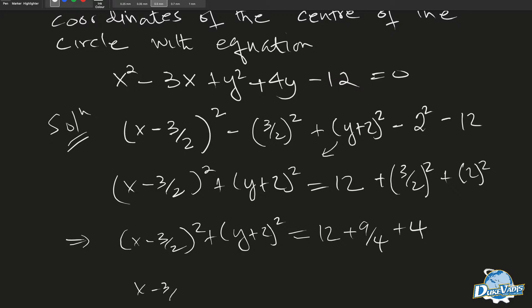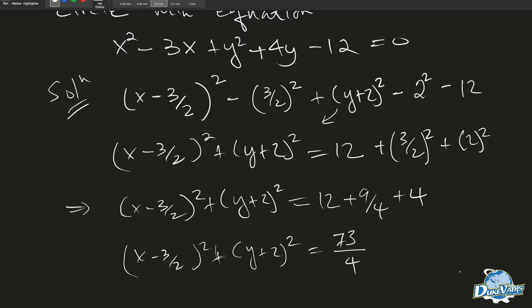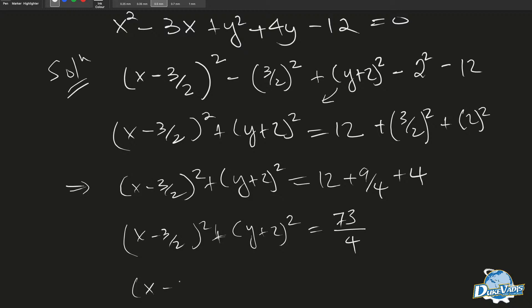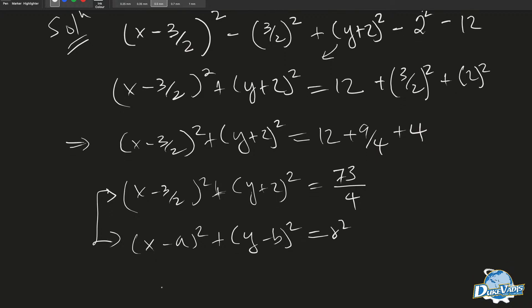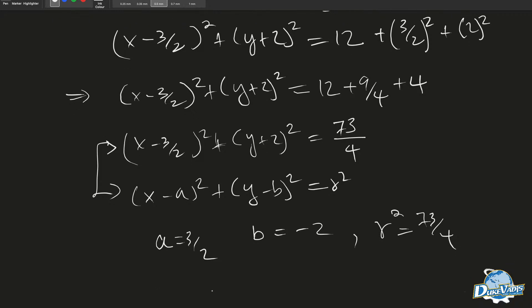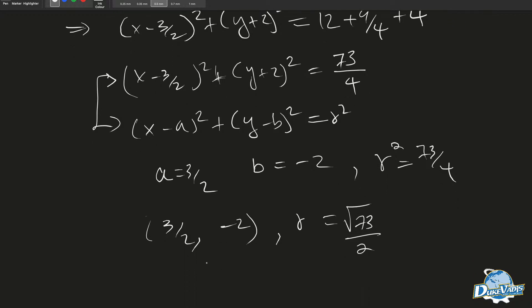When we compute it carefully, we get x minus three over two squared plus y plus two squared equals 73 over four. Now if we compare this equation to our general form x minus a squared plus y minus b squared equals r squared, we see that our a, which is the x-coordinate of the center, equals three over two; our b equals negative two; and r squared equals 73 over four. So our center is (3/2, -2) and our radius r equals the square root of 73 over four.